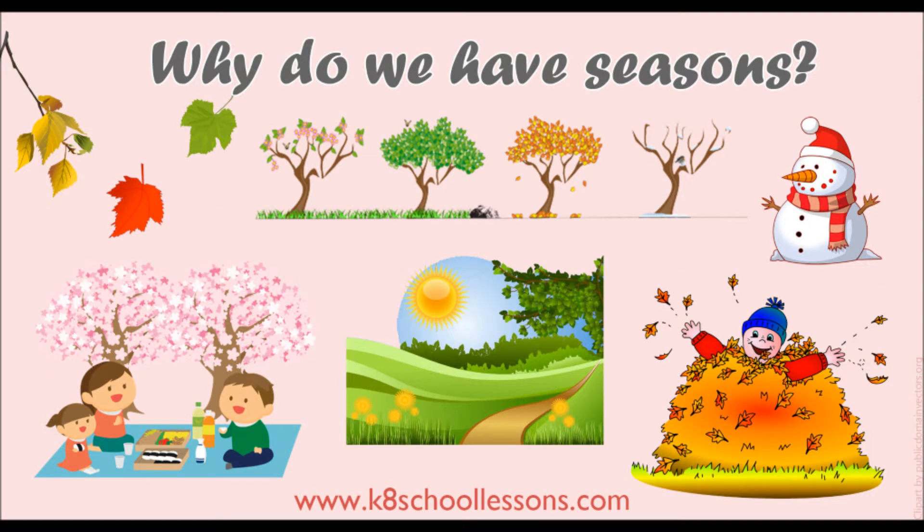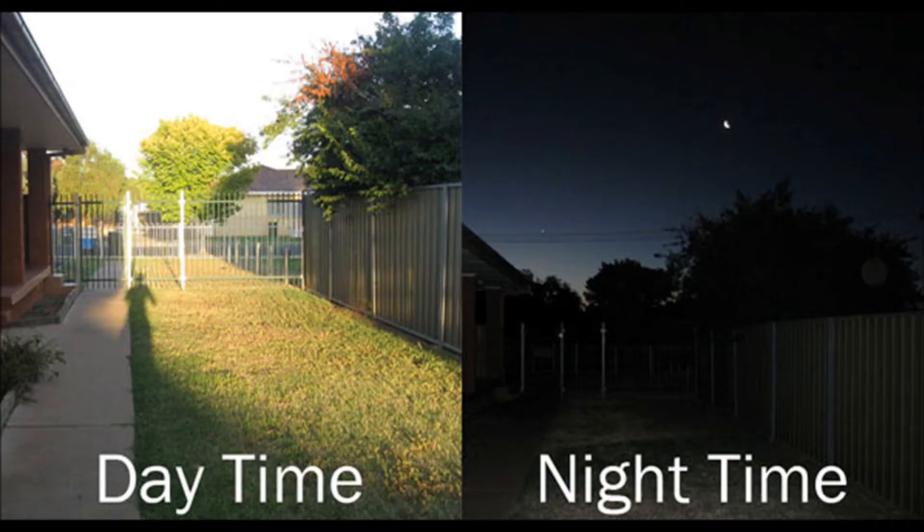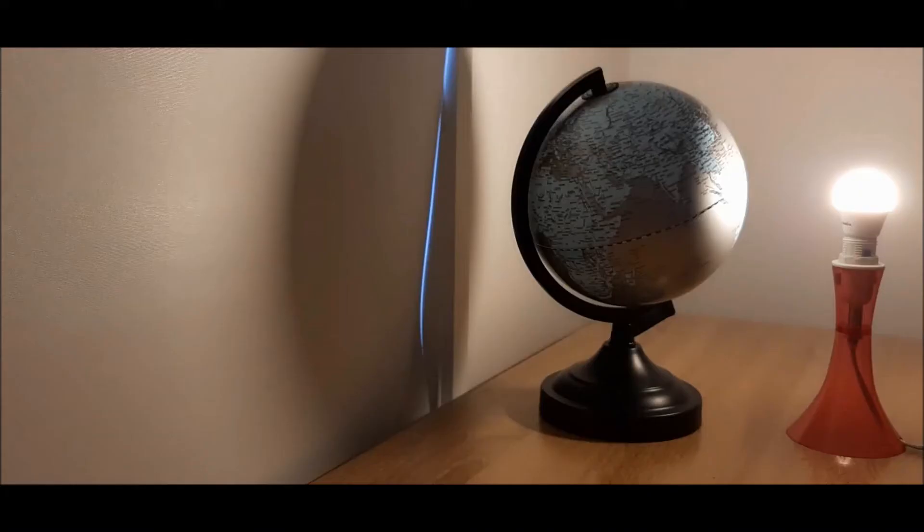Why do we have seasons? Our Earth is tilted and rotates on its own axis, which we call rotation. This movement of the Earth produces day and night, or the 24-hour day.